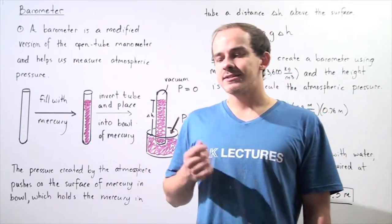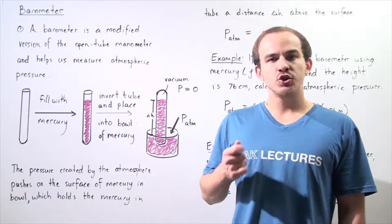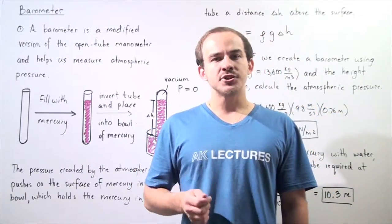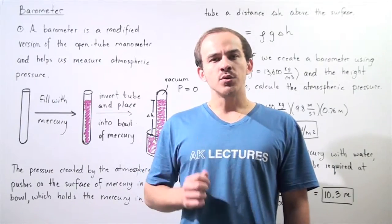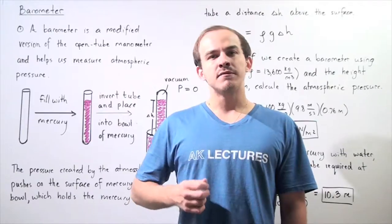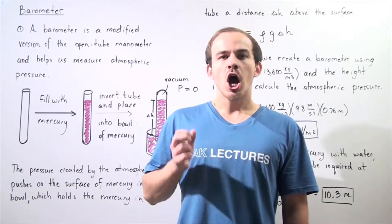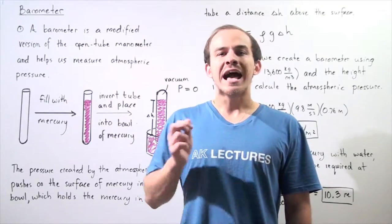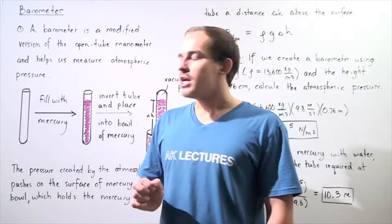In the previous lecture we discussed the open tube manometer and we said that the open tube manometer is simply an instrument that allows us to measure the pressure inside a container. Now we're going to discuss a second type of device which is essentially a modified version of the open tube manometer called the barometer that allows us to measure the pressure of our atmosphere.